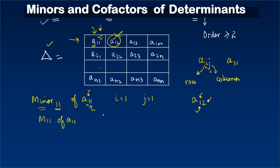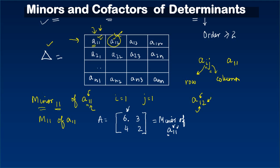Let's say we have a matrix A of order two: [6, 4; 3, 2]. To find the minor of a₁₁ — which is the element in row one, column one, which is 6 — I remove the first row and first column. What is left is 2, so the minor of a₁₁ is equal to 2.